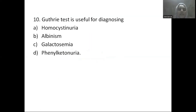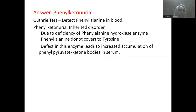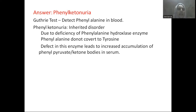Next question: the Guthrie test is useful for diagnosing — Option A: homocystinuria, Option B: albinism, Option C: galactosemia, Option D: phenylketonuria. The answer is phenylketonuria. The Guthrie test detects this inherited disorder caused by deficiency of phenylalanine hydroxylase enzyme, which prevents phenylalanine from converting to tyrosine. This causes accumulation of phenylalanine, converted to phenylpyruvate and phenylacetic ketone bodies.